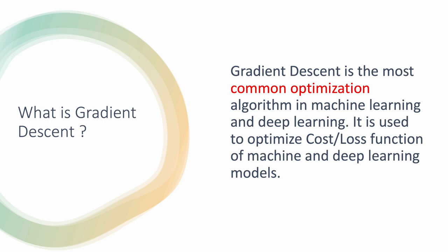What is it used for? If you have some background in machine learning or deep learning, we have something called cost, loss, or objective function. Gradient descent is the most common way in which we optimize or minimize those objective or loss functions.